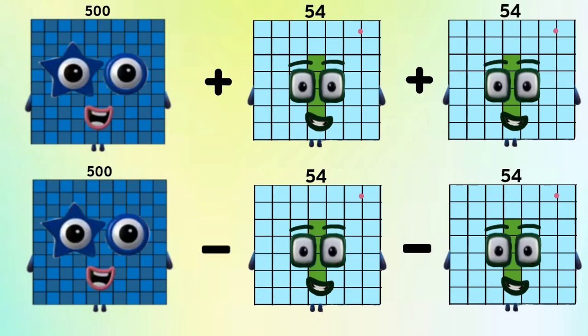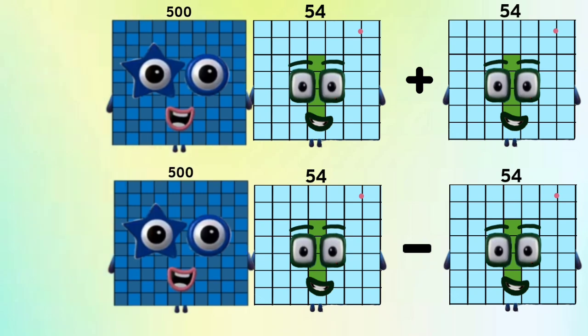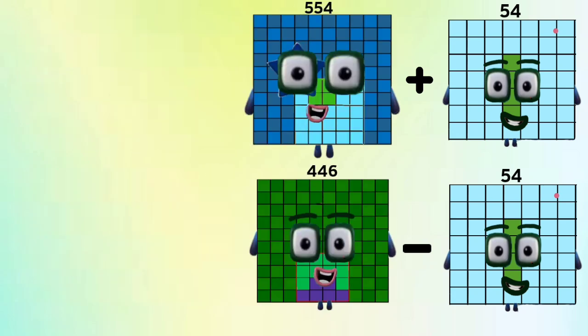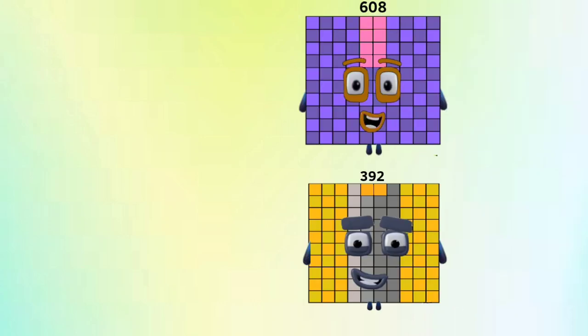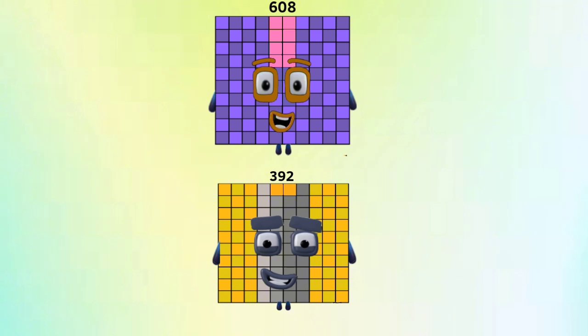Number Blocks 500 plus and minus Number Blocks 54 equals Number Blocks 554 and 446. Number Blocks 500 plus Number Blocks 54 and Number Blocks 446 minus Number Blocks 54 equals Number Blocks 608 and 392.